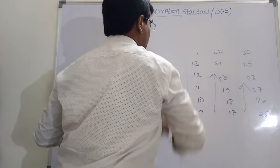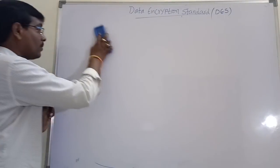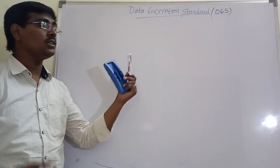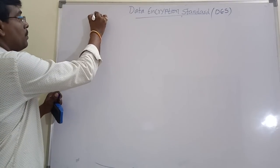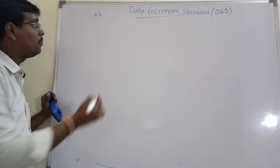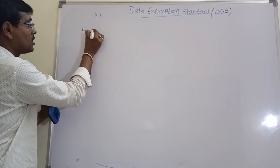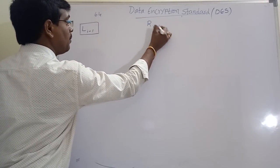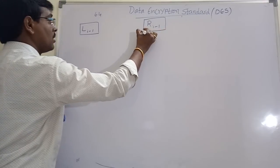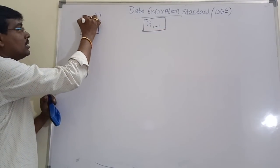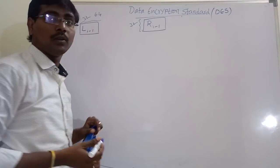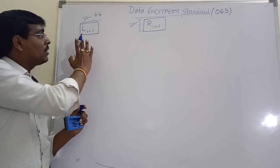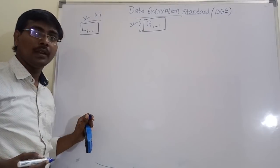Now we will discuss single round operation. DES algorithm follows Feistel cipher. Feistel cipher means divide the total plaintext into equal number of halves. Our plaintext size is 64 bits, so it is divided into two halves: the left half represented as L(i-1) of 32 bits, and the right part as R(i-1) of 32 bits. According to Feistel cipher, the left half remains the same while the operation is performed on the right part.